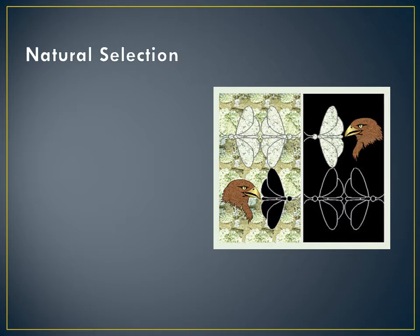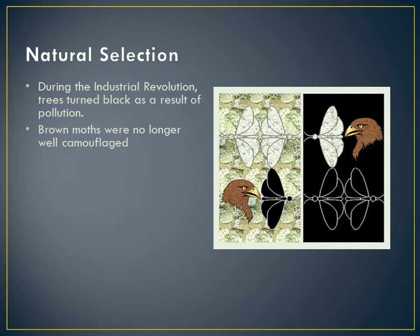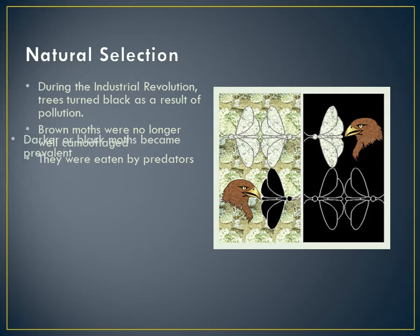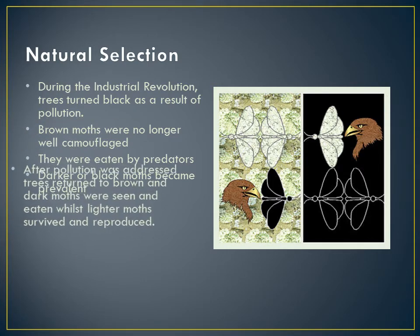We can use the example from school biology lessons of the moth during the Industrial Revolution. During this time, trees turned black as a result of pollution. As a result, lighter moths were no longer well camouflaged and so were easily targeted by predators. These moths were not well adapted to their new environment and so they couldn't survive. Those who by chance were darker in colour and therefore well camouflaged were able to survive and could then pass on their genes to offspring. As the pollution problem lifted, the same effect could be seen as the colour of the trees changed again.